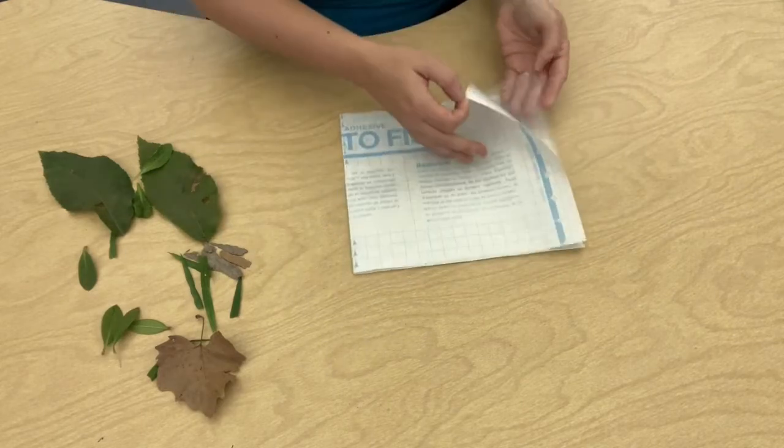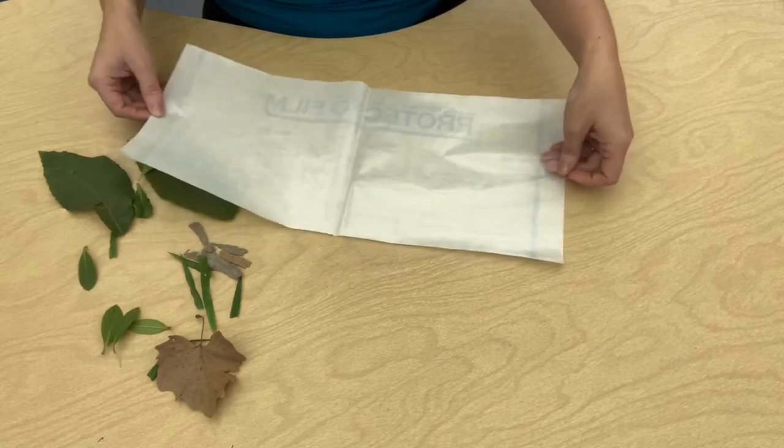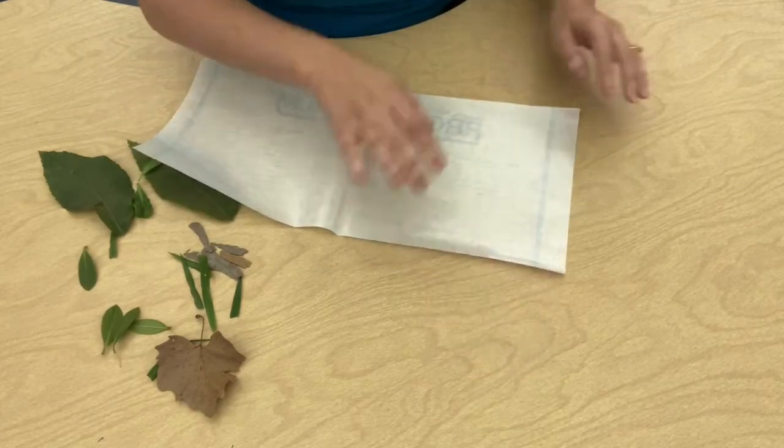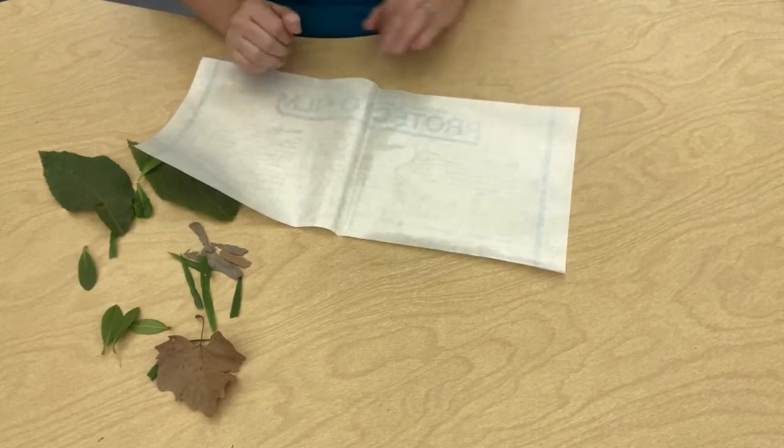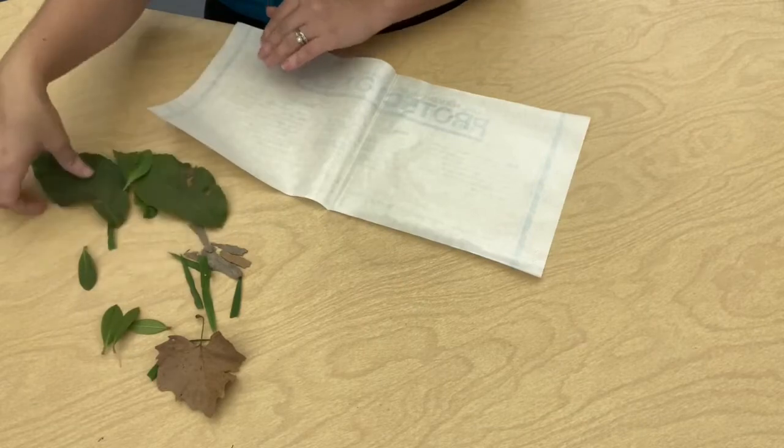Whoops, I kind of have mine backwards. We're going to peel it off and then we're going to stick on all of our materials onto the sticky part. This is just the paper part. We want to stick all of our things onto our sticky part.